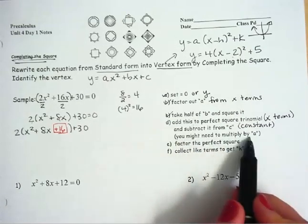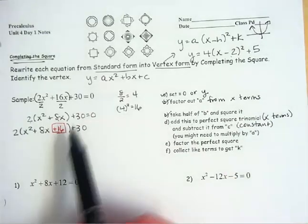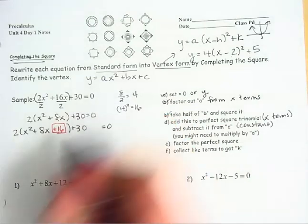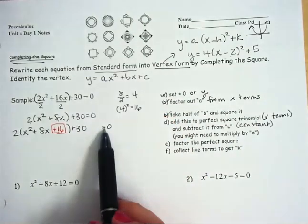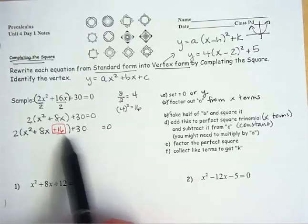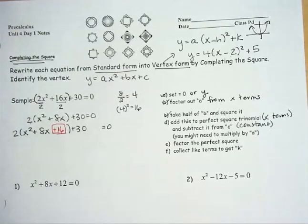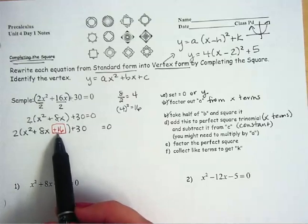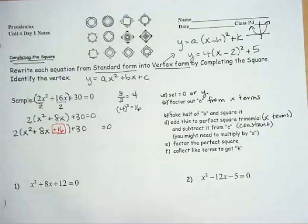And then it says subtract it from C. C is the constant, in this case it's the 30. And it says you might need to multiply by A. And here's why: it feels a lot like I just added 16 to the left side of this equation. Now remember that equations are imbalanced. The left side equals the right side. So if you go messing around with the left side, you have to balance that out somewhere to keep the equation equal.